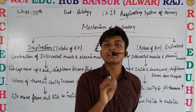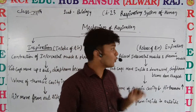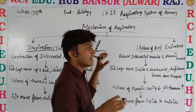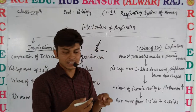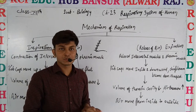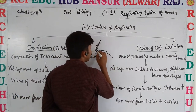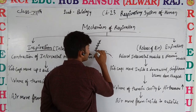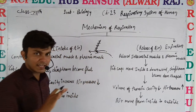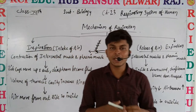These external intercostal muscles contract, and due to contraction, the rib cage moves upward and also outward. The diaphragm is connected to the rib cage by the help of phrenic muscles. The phrenic muscles also undergo contraction during inspiration.